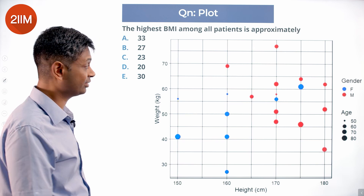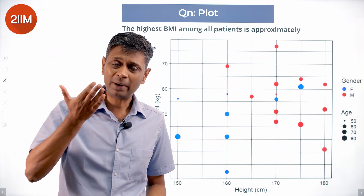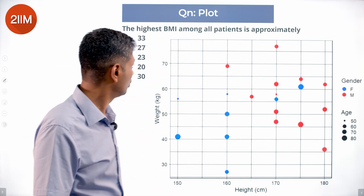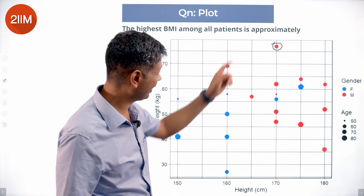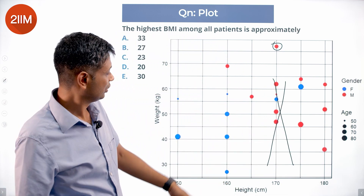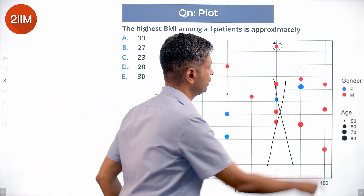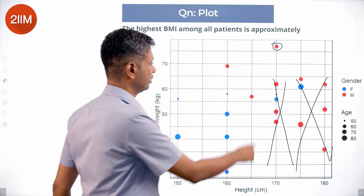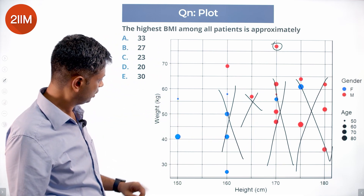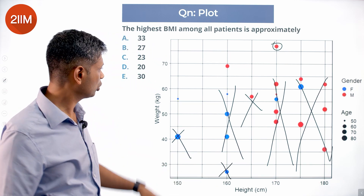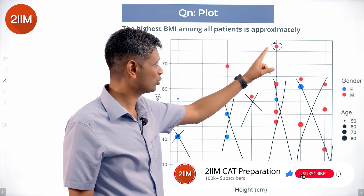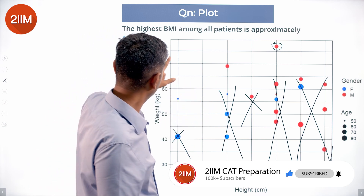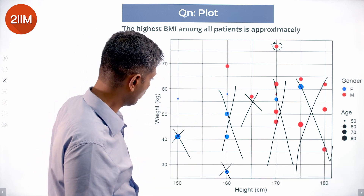The highest BMI among all patients — I like this question. BMI is weight divided by height squared. Looking at everyone in the range, one point stands out. As long as that point is there, all others at the same height with lower weight are ruled out. Taller points with lower weight are also ruled out. One candidate is heavier and shorter than another. We narrow it down to only three points that actually need computation.